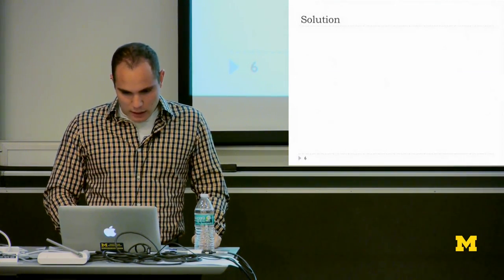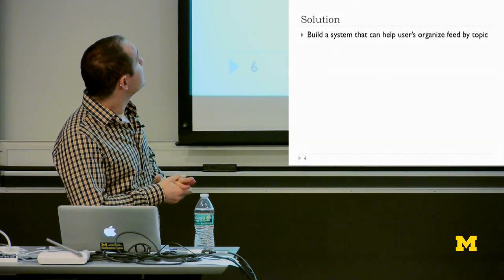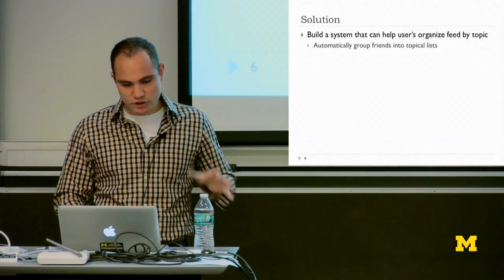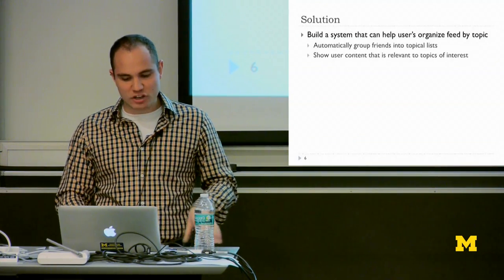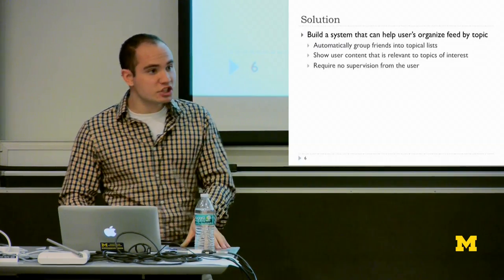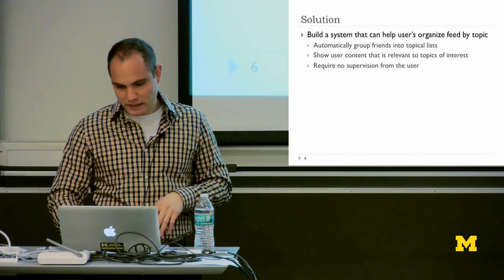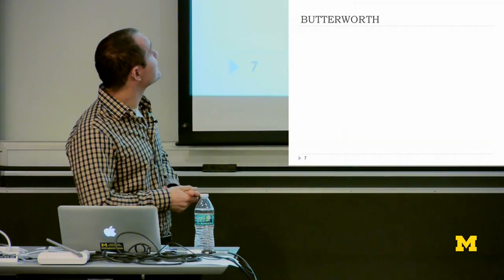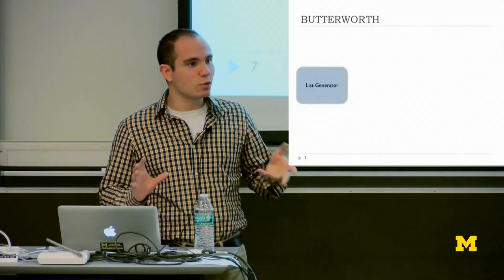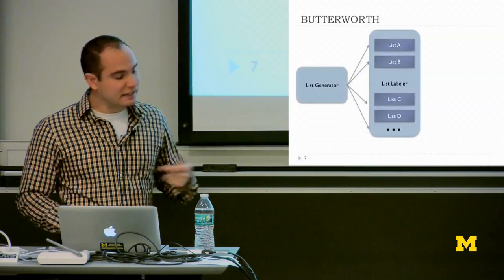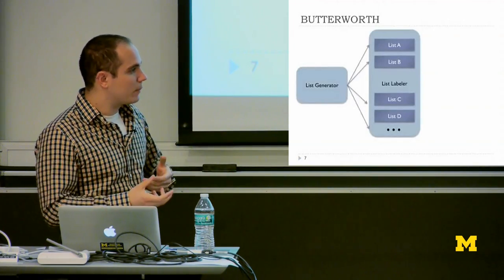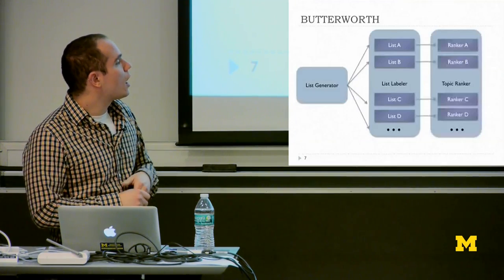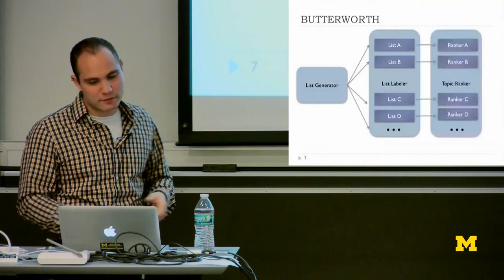The solution we present is to build a system that helps users organize their feed by topic. We want to automatically group friends into topical lists, do list creation automatically, and then show users content relevant to the topics of those lists — requiring no supervision from the user. We created the system Butterworth. The first step is to generate lists automatically, the second is to label them with a proper semantic label, and the third is to train a ranking model for each list to push relevant content to the top of the feed.